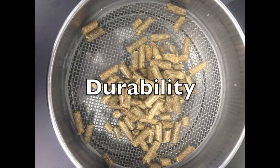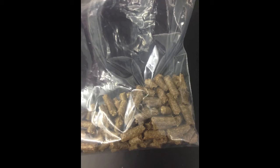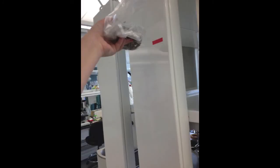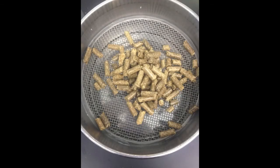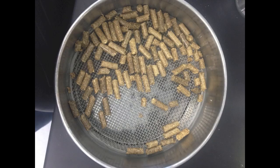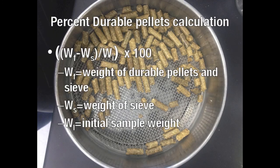Lastly, you will estimate the durability of the biomass. First, weigh out approximately 100 grams of pre-screened biomass into a tared poly storage bag. You can use the screened sample from your percent fines determination. Remove excess air from the bag and seal it. Fold the bag horizontally over a hard surface at a height of 6 feet and drop it a total of 10 times, ensuring that the bag remains sealed after each drop. Sieve the sample by tilting it side to side 10 times; the durable pellets will remain in the sieve. After sieving, weigh the sieve with the remaining pellets. Then calculate the percent durable densified pellets by taking the weight of the sieve and durable pellets minus the weight of the empty sieve, divided by the initial sample weight, and multiplying by 100.